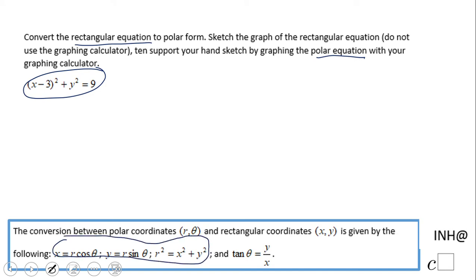Now first of all, let's take a look at what is the shape of this curve given by this equation. This is a circle with center (3, 0) and radius of 3. All right, so we'll see at the end if we get something like that.